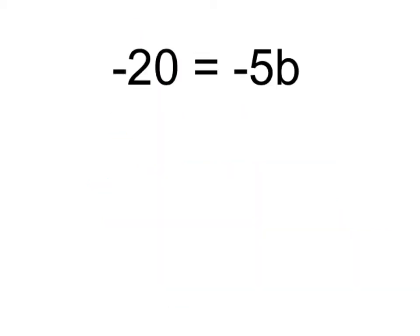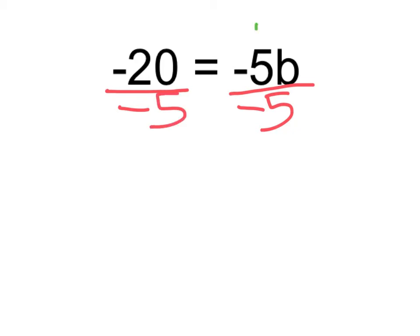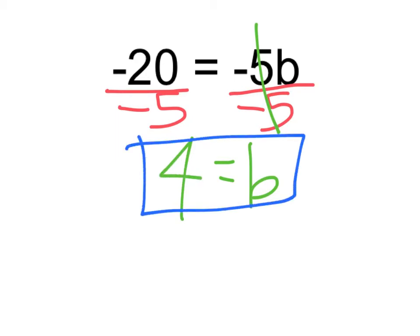We always need to get the variable by itself. Here we have negative 5 times b, and the opposite of multiplication is division. So let's divide both sides by negative 5. When we do that, negative 5 divided by negative 5 cancels out, so all we're left with is b. And negative 20 divided by negative 5 is 4. That's our solution.